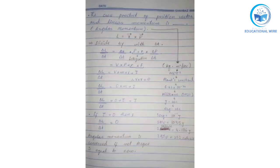Now, the cross product of a position vector and linear momentum is called angular momentum. Note that there was a vector product of position vector and force called torque; here it is the cross product of position vector r and linear momentum p that is called angular momentum L. So L = r × p.